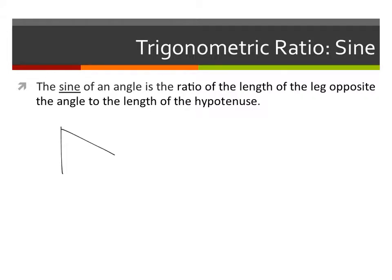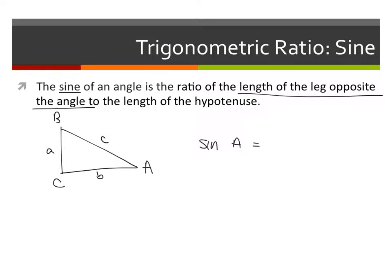Let's say we have a right triangle with vertices A, B, C. We have angle A, angle B, angle C and the opposite sides are going to be a, b, c — just small letters. The sine of an angle, let's take A: sine of angle A is a ratio of the length of the leg opposite the angle. Opposite angle A is small a, over the length of the hypotenuse which in this case is C.